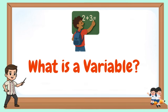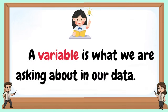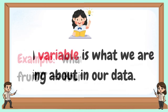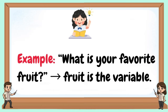What is a variable? A variable is what we are asking about in our data. Example: what is your favorite fruit? Fruit is the variable.